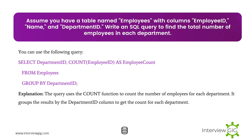Next Scenario: Assume you have a table named Employees with columns Employee ID, Name, and Department ID. Write an SQL query to find the total number of employees in each department. The query uses the COUNT function to count the number of employees for each department and groups the results by the Department ID column to get the count for each department.